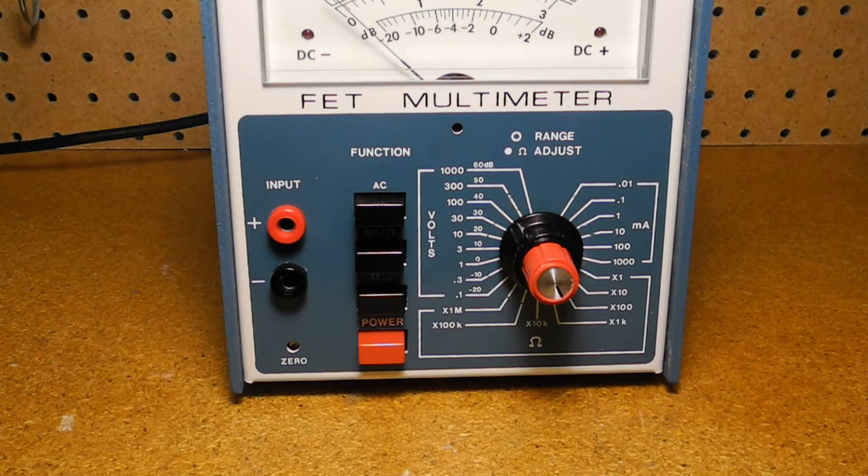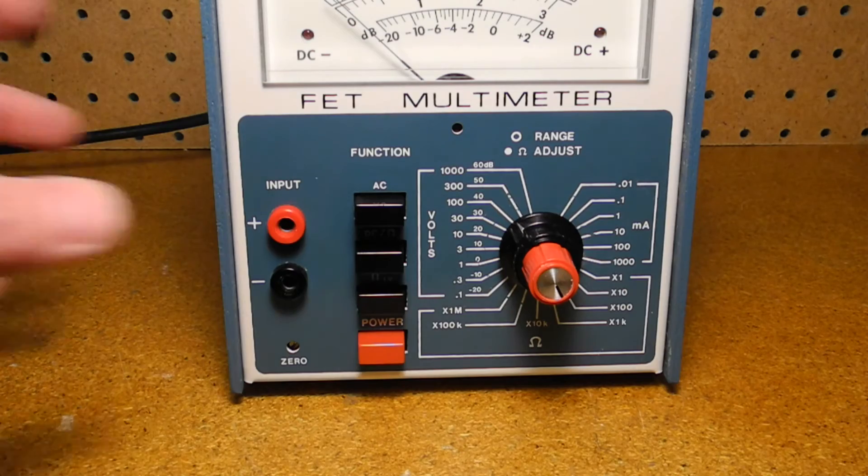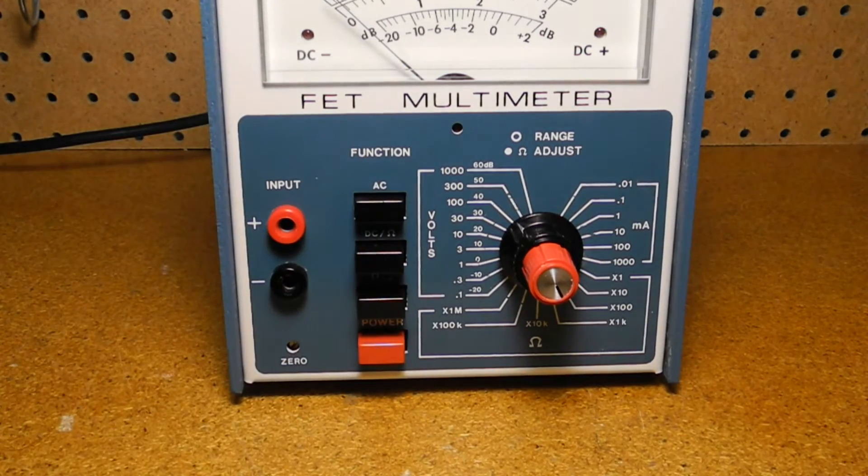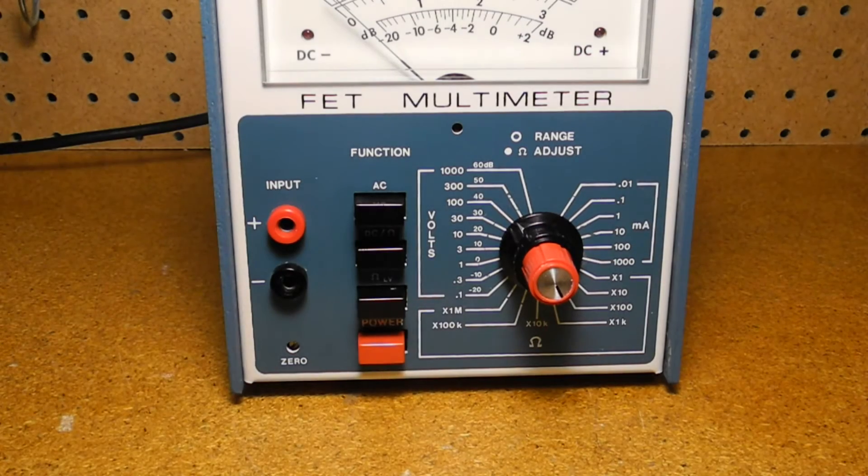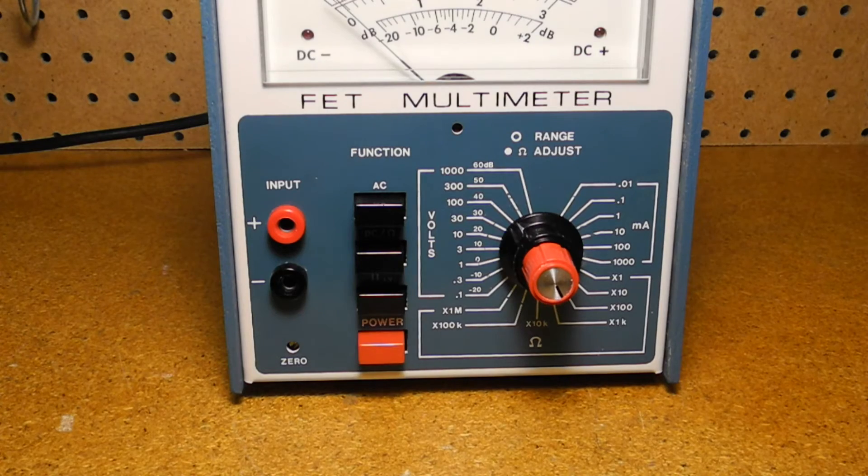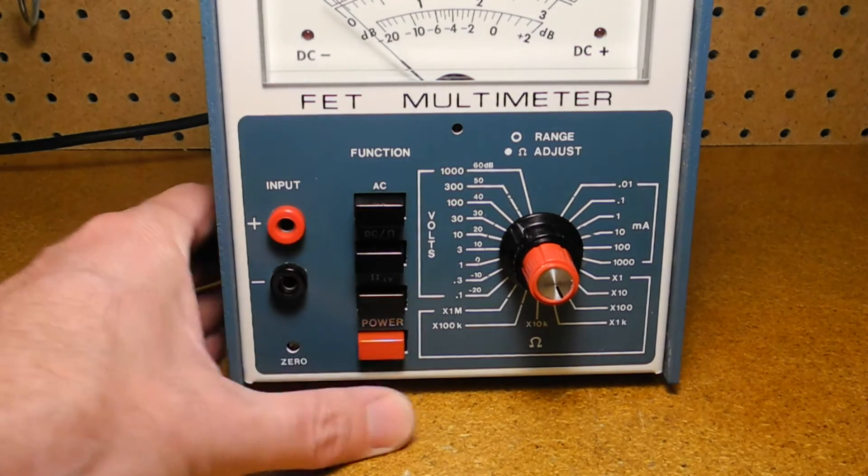There are four press-to-activate function switches. The top three only allow one to be selected at a time. The AC switch is for selecting AC voltage and current ranges. The DC ohms is for DC voltage and current ranges and resistance. The ohms low voltage is for the low voltage resistance ranges. And the red switch is power on-off.